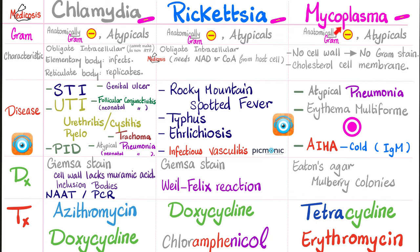If you have mycoplasma pneumonia and I try to diagnose you with gram stain — the whole purpose of gram stain is to stain the cell wall, but mycoplasma doesn't have one. Likewise, treating mycoplasma with penicillin — a cell wall synthesis inhibitor — makes no sense. So no penicillins, no cephalosporins, no carbapenems, no monobactam, no vancomycin, no bacitracin. Instead: yes to tetracycline and yes to erythromycin. Doxycycline is one of the tetracyclines, and it can treat all three atypical bacteria — doxycycline is the hero for atypical bacteria.